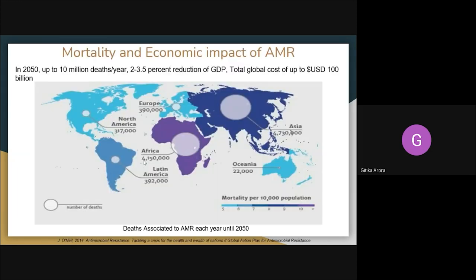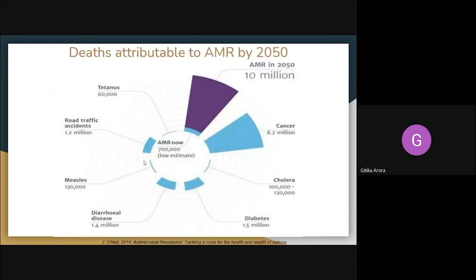Looking at the mortality and economic impact of AMR, it is envisaged that by 2050 up to 20 million deaths per year are projected, leading to a 2 to 3.5% reduction of GDP. The figures show that an estimated 10 million deaths annually will be attributable to AMR by 2050, with antibiotic resistance continuing to increase.